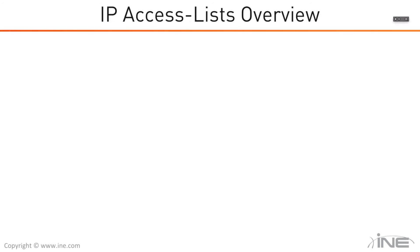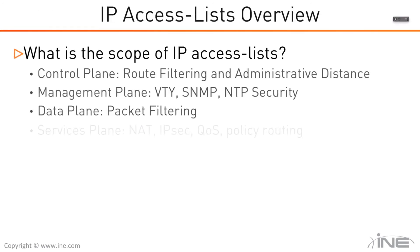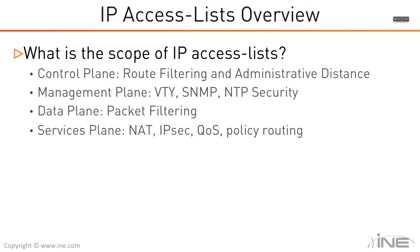What is the scope of access lists? Why do we have them? We can use them for the control plane — for example, for route filtering or AD change, meaning manipulation of the admin distance of a routing protocol.